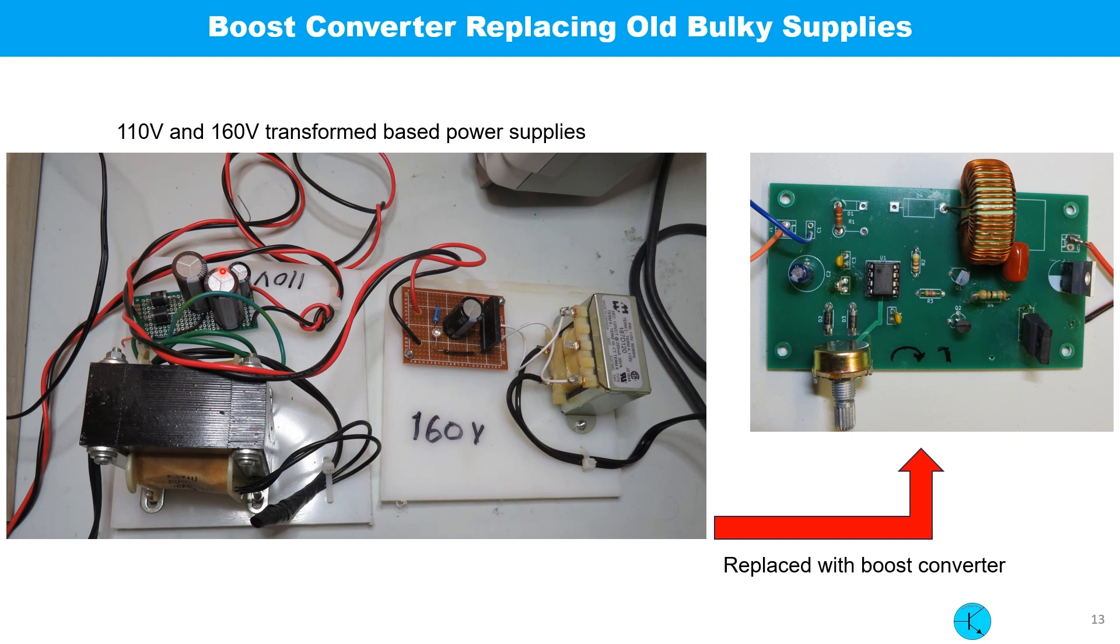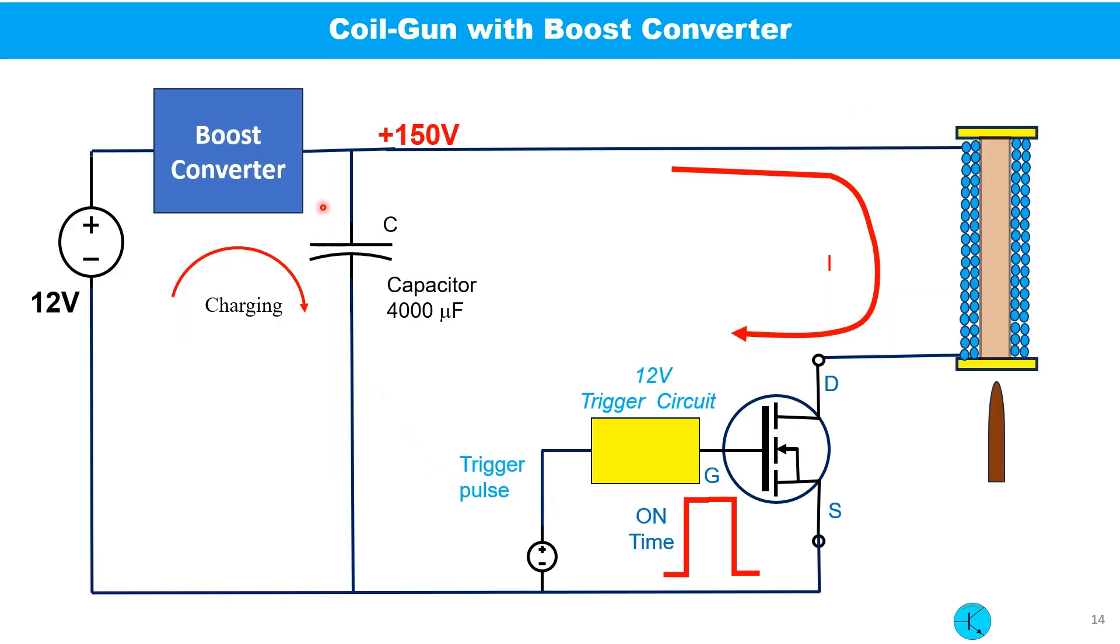Previously I tried 110 volt and 160 volt power supplies with my coil gun, so these are replaced by this small boost converter. This is our original coil gun circuit and this is the capacitor that should be charged with higher voltage, like more than 100 volt, to be an effective coil gun. This is the boost converter and at the input we are using only 12 volt which can be converted to 150 volt and that can be used to drive the coil gun.